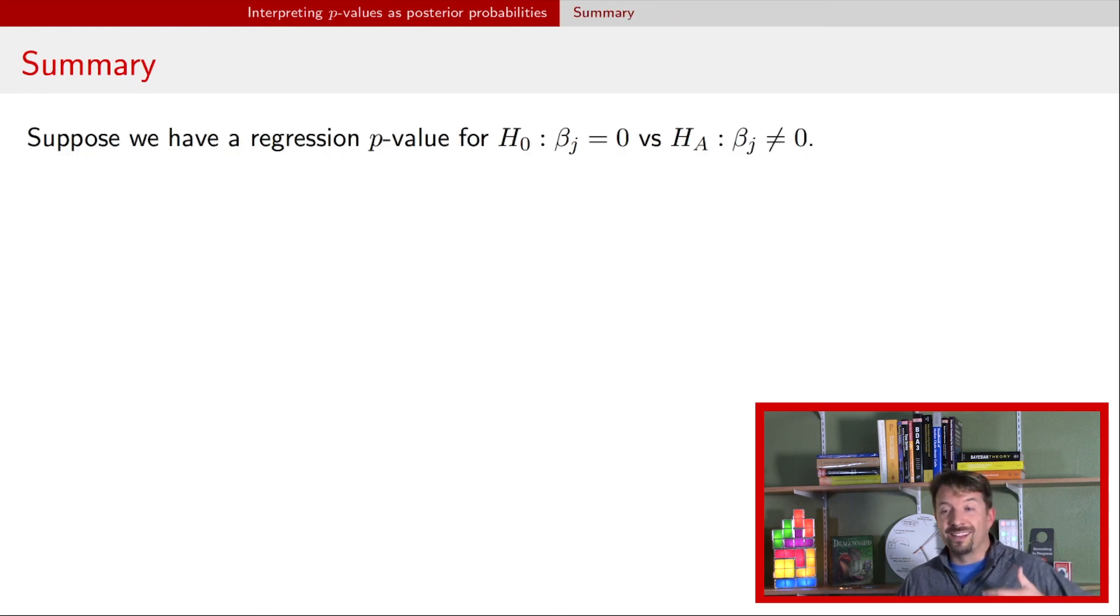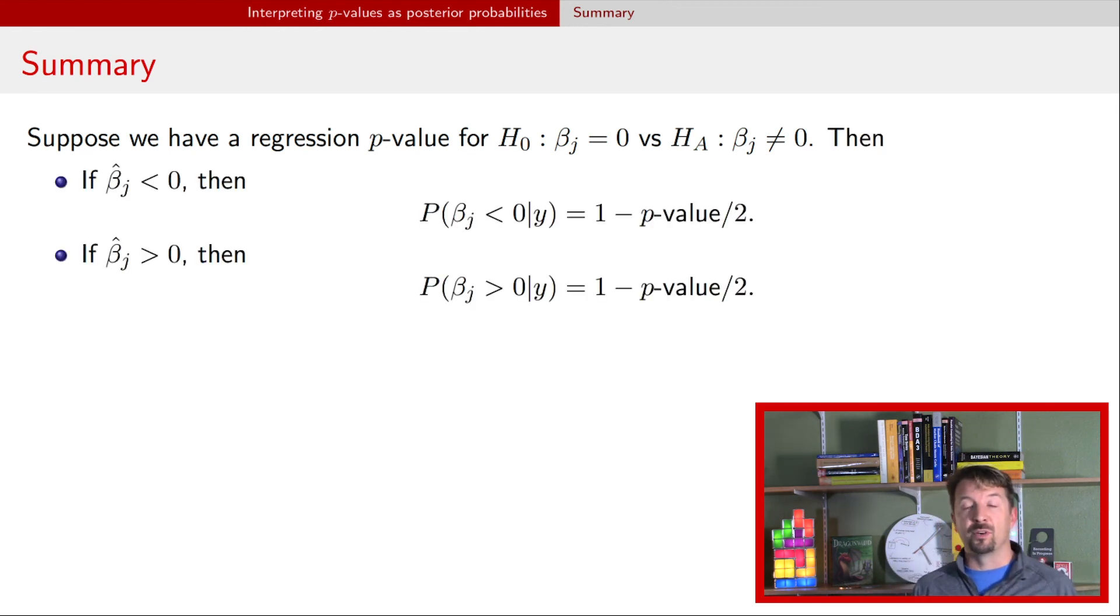All right, so I tried to get you the idea here in this video about how to take the p values from regression output and convert them into Bayesian posterior probabilities. And I did that because for me, I think that Bayesian posterior probabilities are much easier to interpret than the p value trying to sort of reject the null and figure out what that means. Okay, so I hope you enjoyed this video. The next video, we'll start talking about ANOVA or analysis of variance. Hope to catch you there.